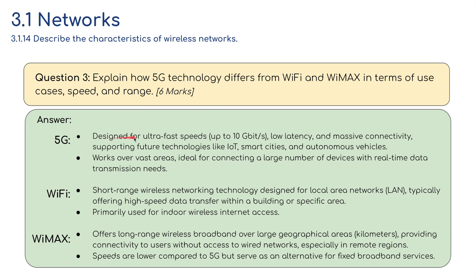Answer to question three: 5G is designed for ultra-fast speeds up to 10 gigabits per second, with low latency and massive connectivity supporting IoT, smart cities, and autonomous vehicles. It works over vast areas, ideal for connecting a large number of devices with real-time data transmission. Wi-Fi is a short-range technology for local area networks, typically offering high-speed transfer within a building. WiMAX offers long-range wireless broadband over up to 50 kilometers, providing connectivity in remote regions where wired networks are unavailable, but with lower speeds than 5G.